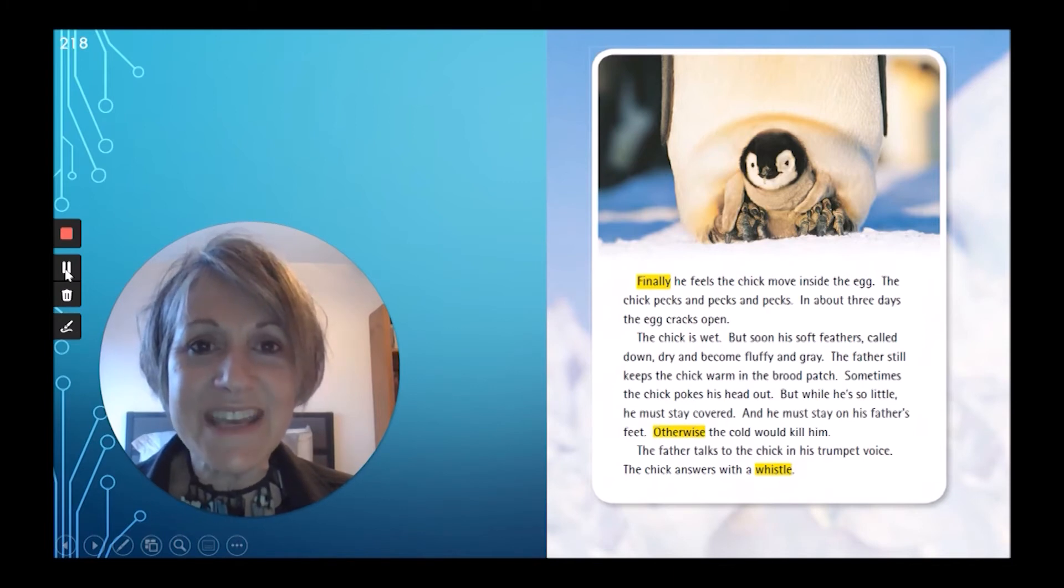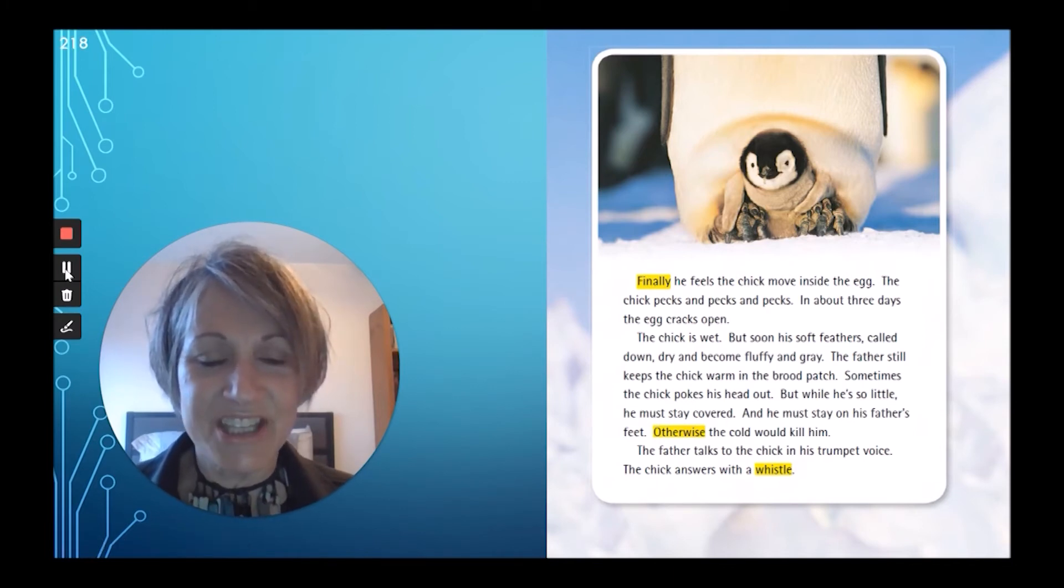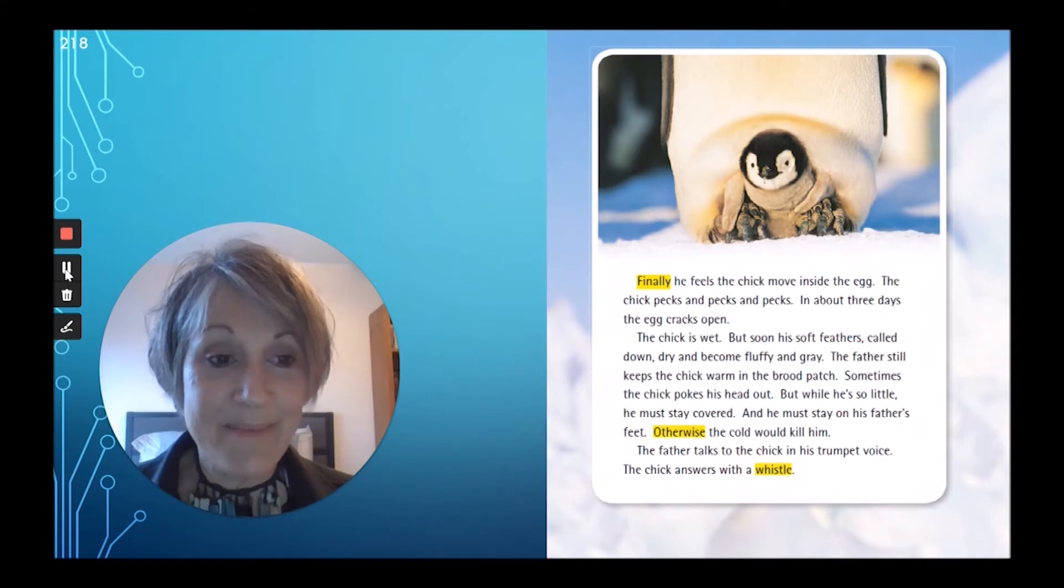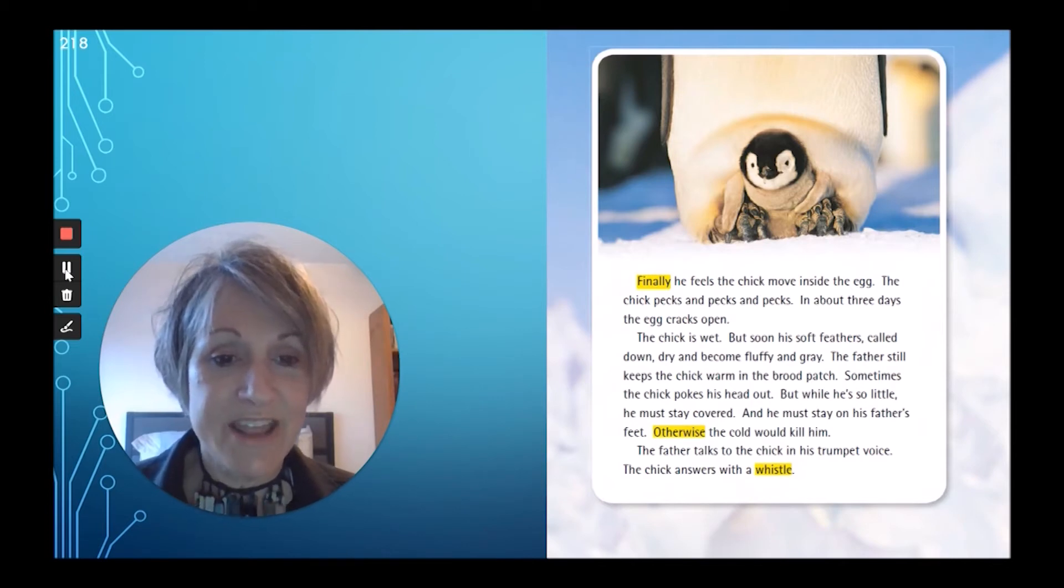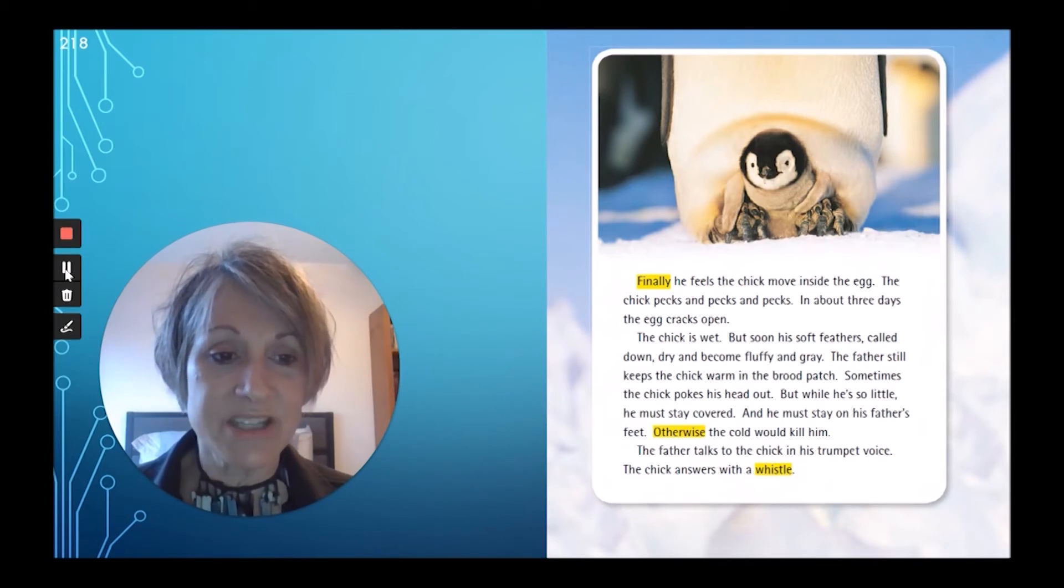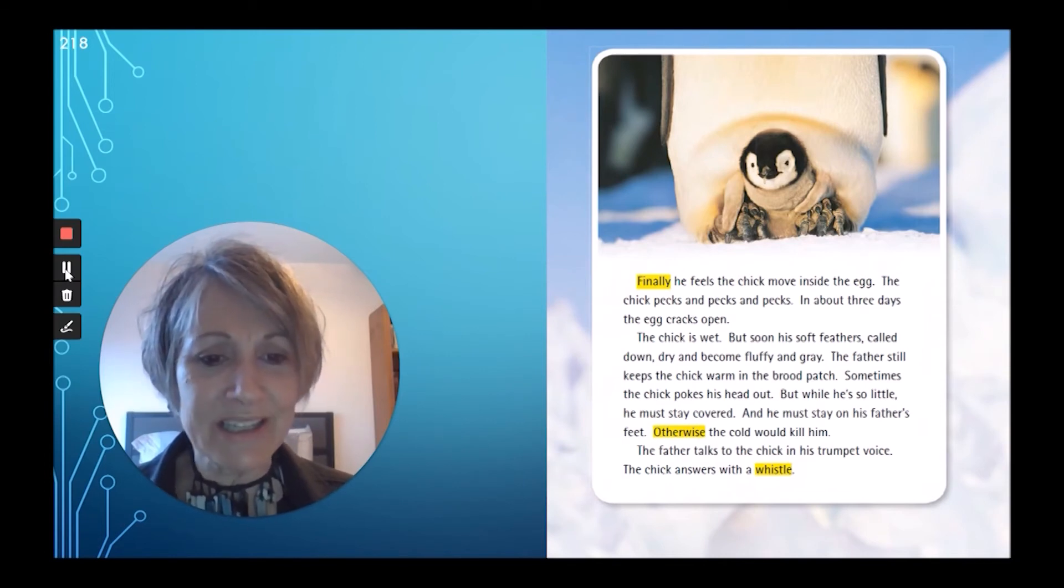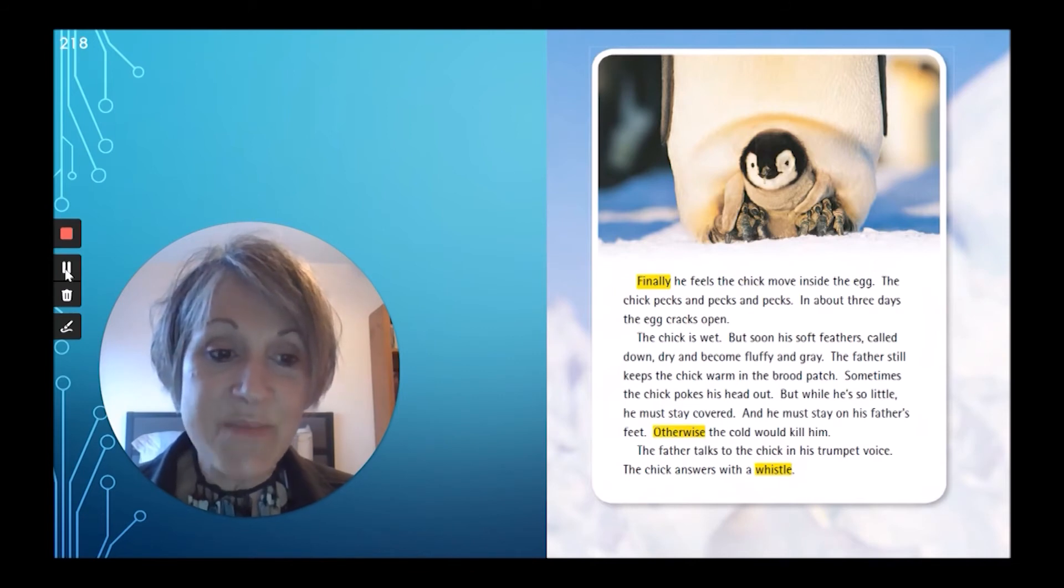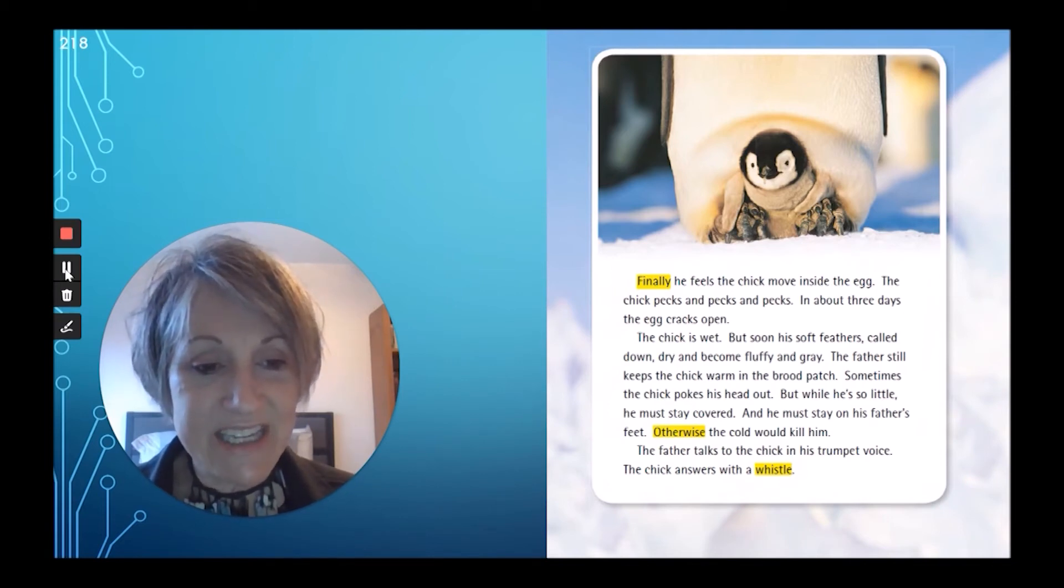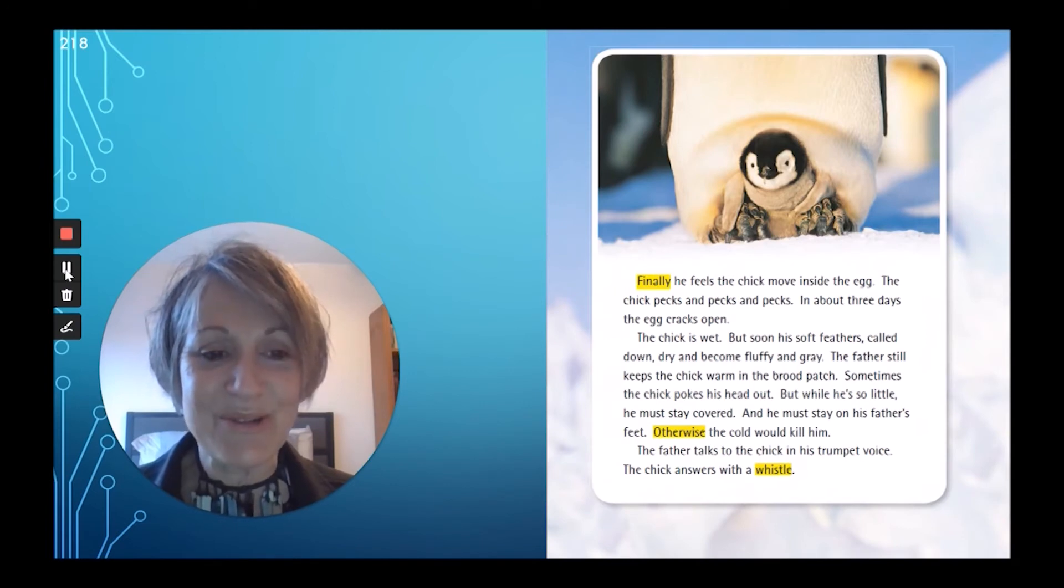Let's go back to our text. Finally, he feels the chick move inside the egg. The chick pecks and pecks and pecks. In about three days, the egg cracks open. The chick is wet, but soon his soft feathers, called down, dry, and become fluffy and gray. The father still keeps the chick warm in the brood patch. Sometimes the chick pokes his head out. But while he's so little, he must stay covered. And he must stay on his father's feet. Otherwise, the cold would kill him. The father talks to the chick in his trumpet voice. The chick answers with a whistle.